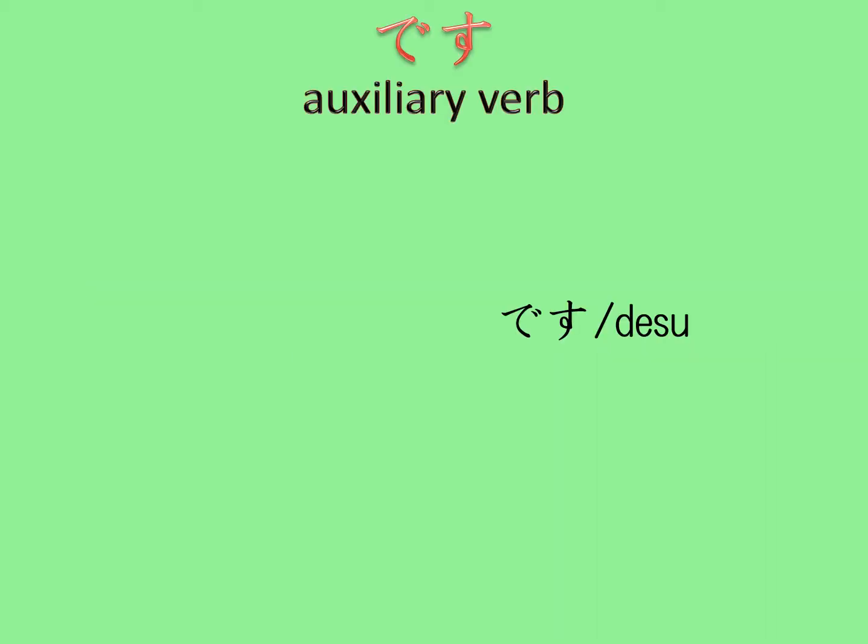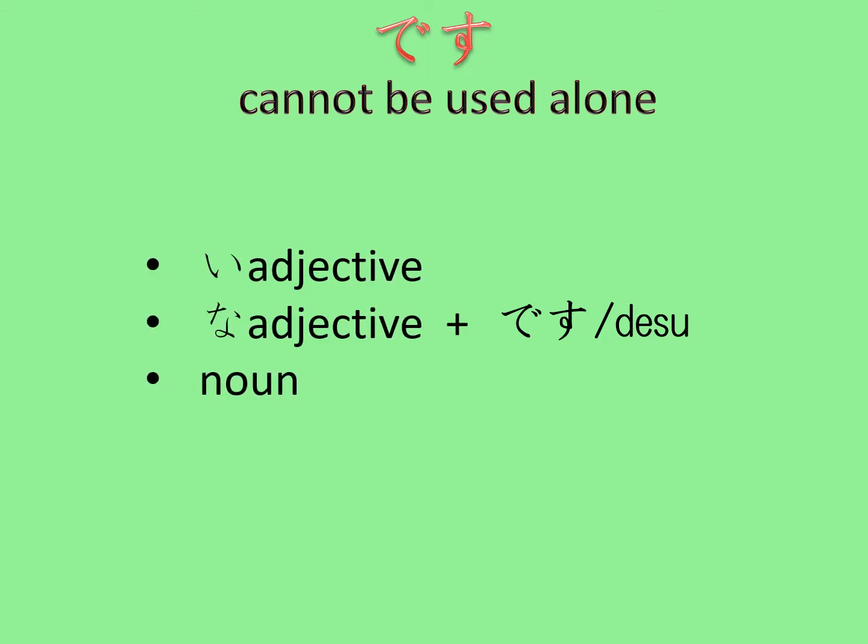Desu is classified as an auxiliary verb in Japanese, which means desu cannot be used alone. Desu is always used with an i-adjective, a na-adjective, or a noun.